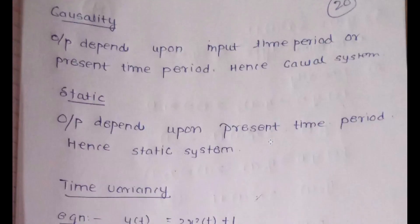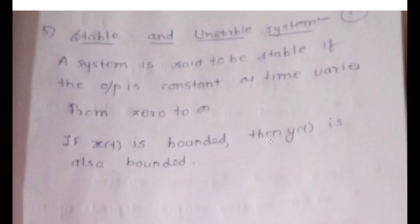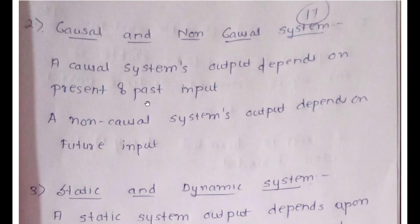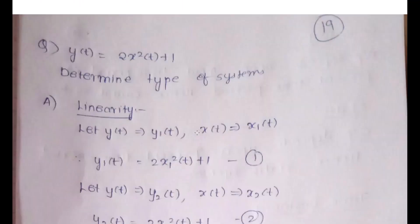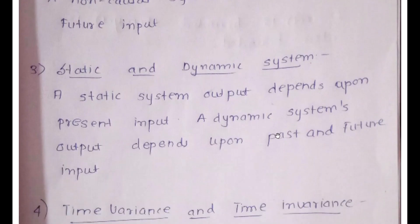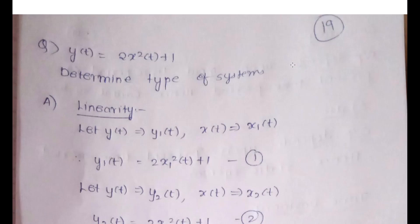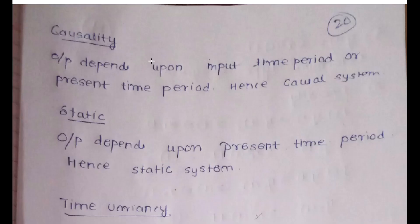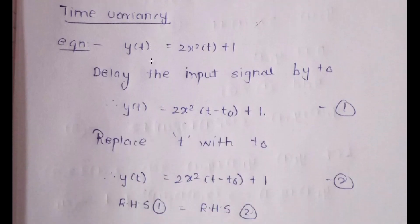For causality: the output of a causal system depends on the present and past input; if it depends on future input it is non-causal. In this example, the output depends only on the present input t — it is not t+t₀ (future), so it is a causal system. Similarly, since the output depends only on the present input t (not t+t₀ or t−t₀), it is a static system, not a dynamic one.